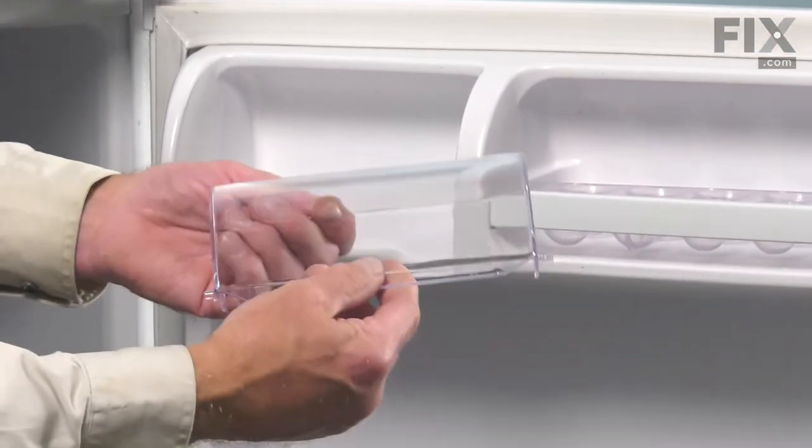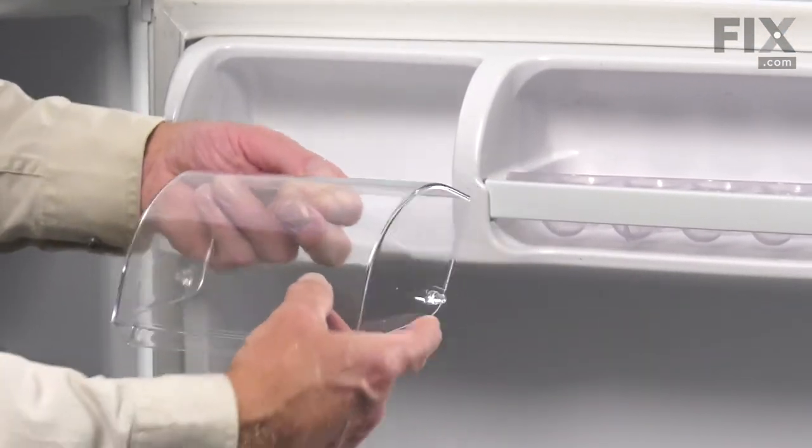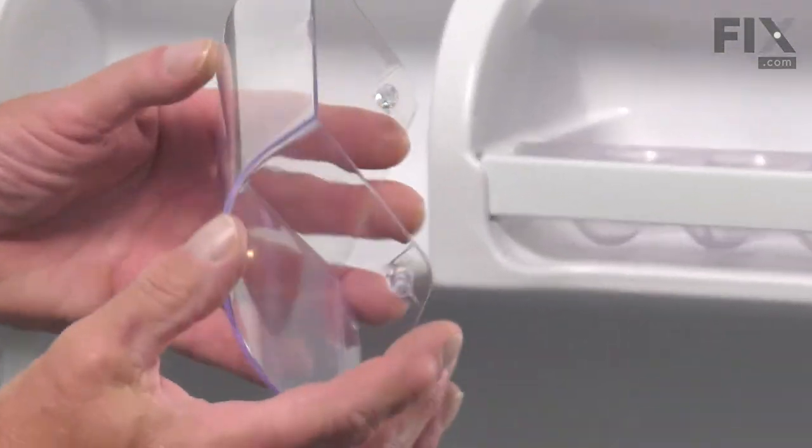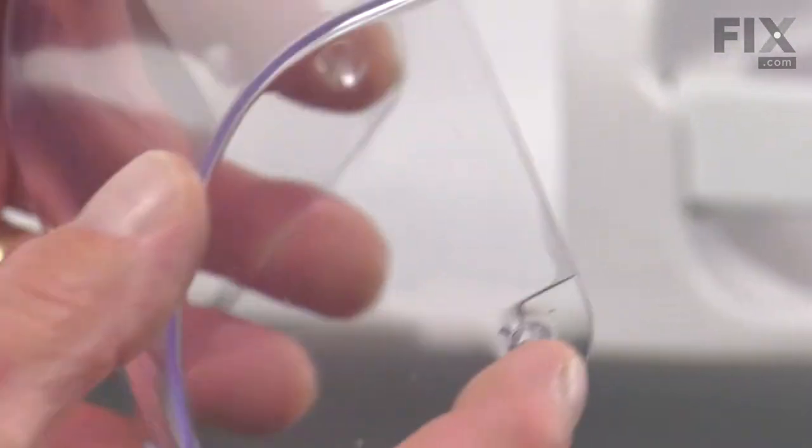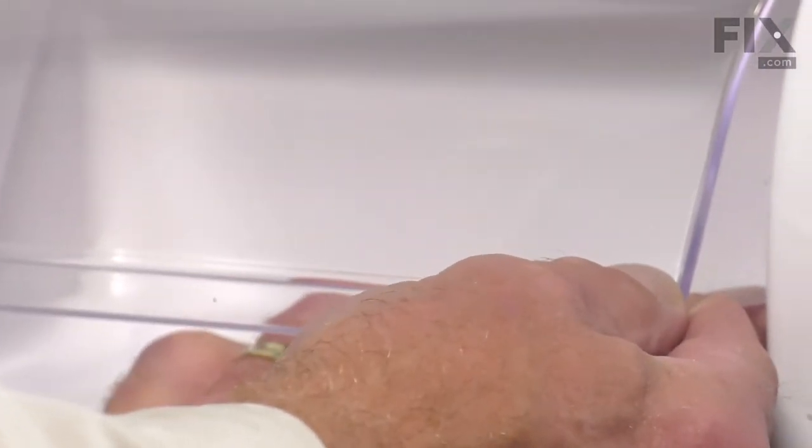Now, to install the new one, make sure that we have the tapered edge pointing down. Then we're going to line up either the left or the right-hand hinge pin with the appropriate hole and liner. Pop it into place. We're simply going to press the opposite side into position and let it pop into place.